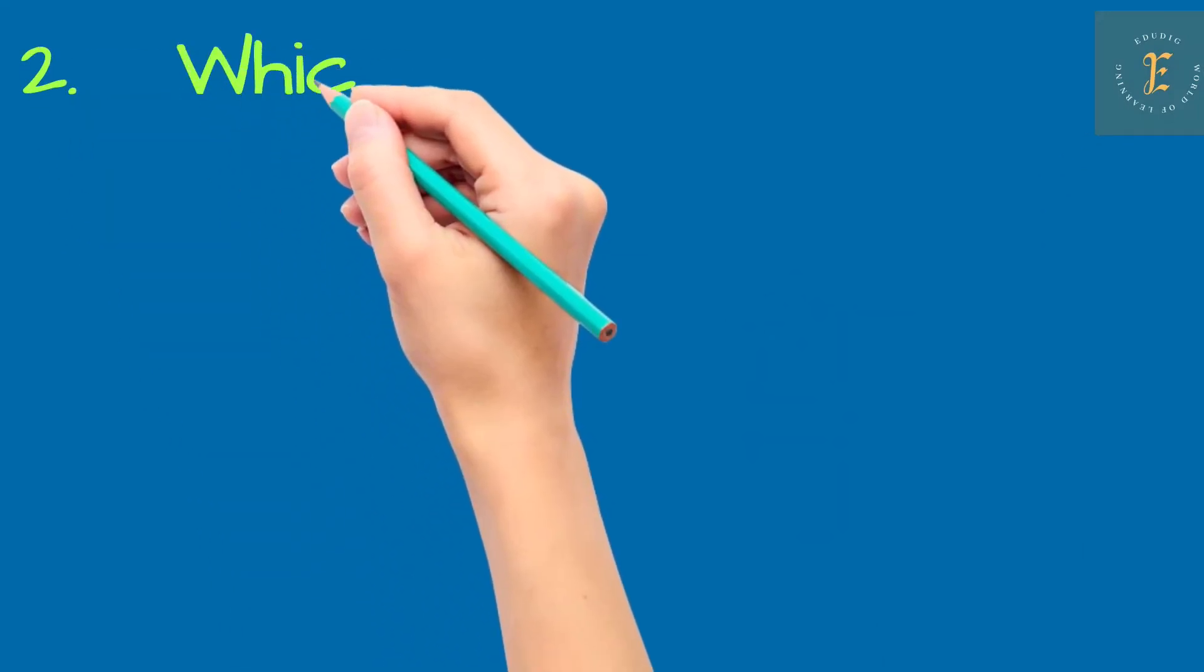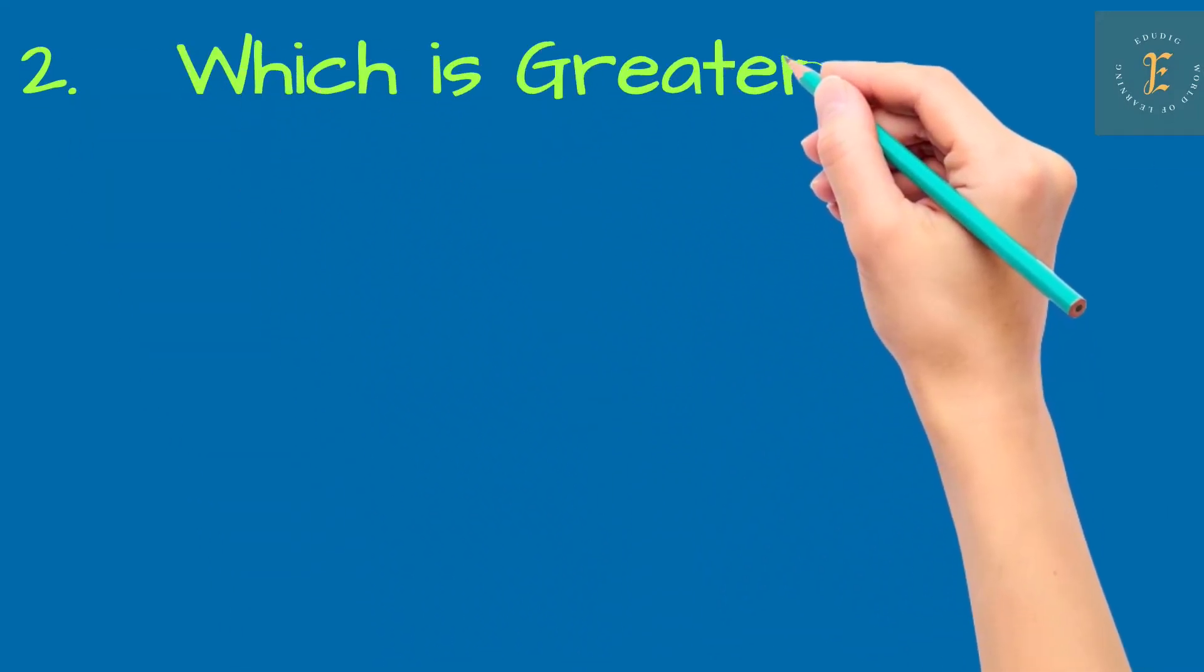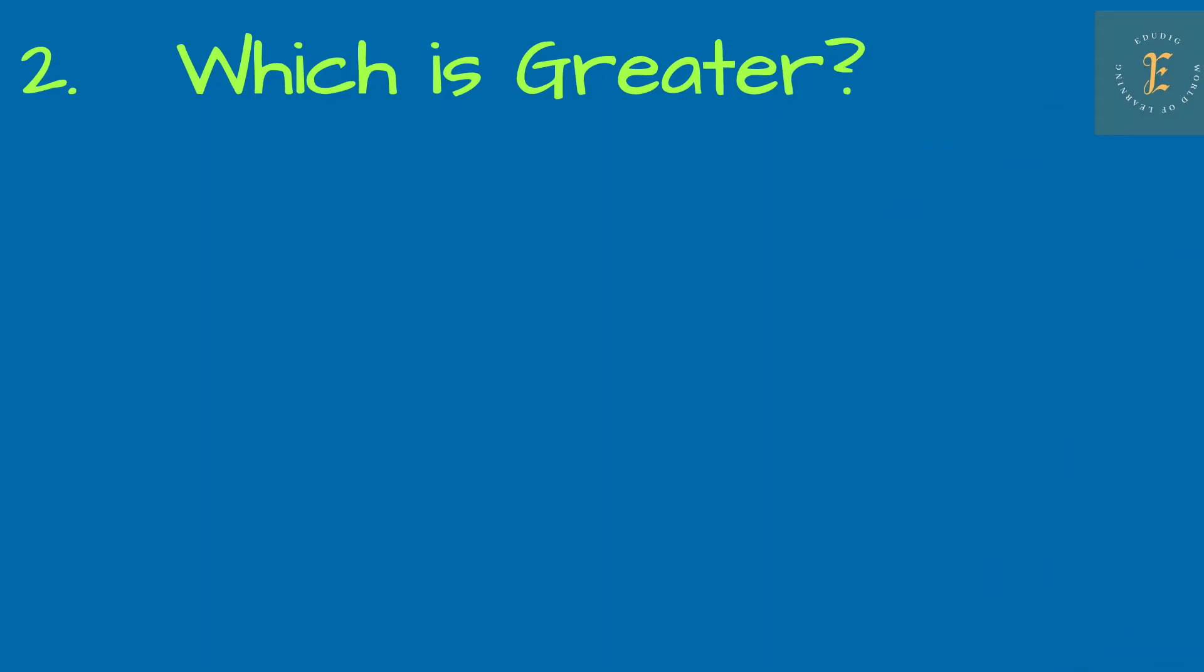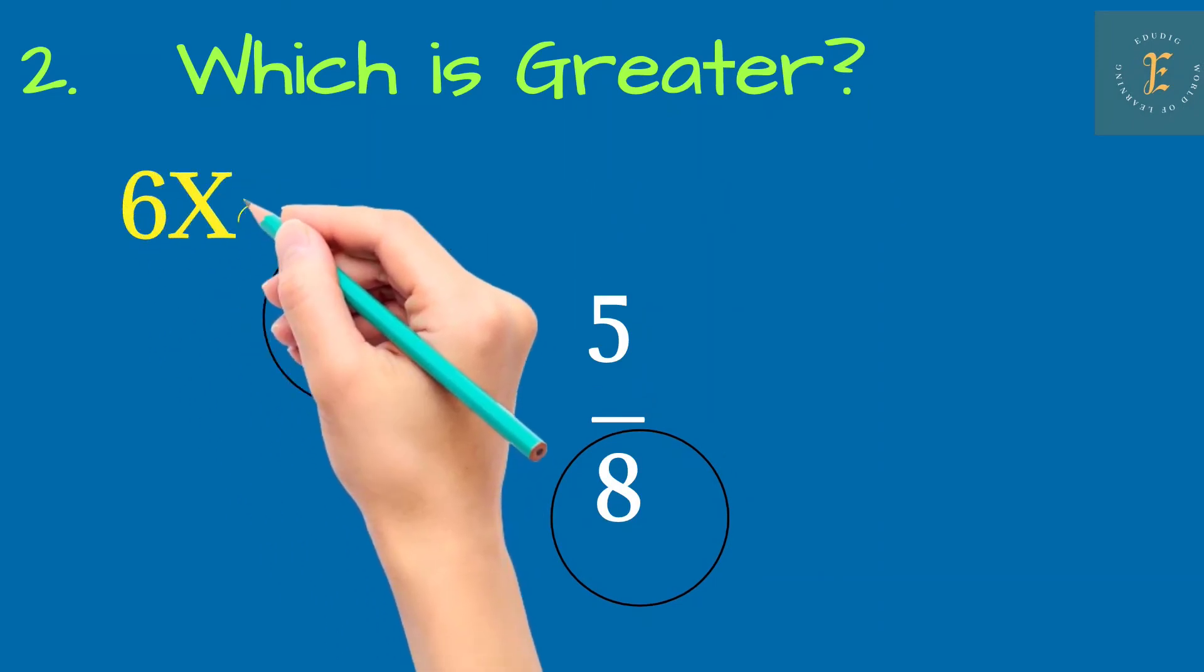Now let's see trick number 2. If you want to compare the fractions, you can use this simple trick. Here you have to check the numerator of first number and the denominator of second number. You can cross multiply them.